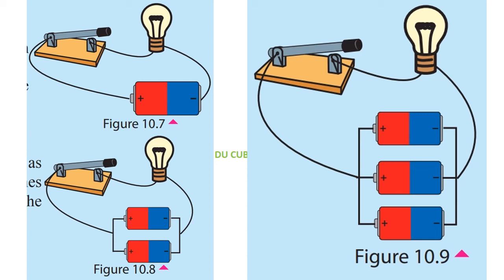Now move to the third circuit. Close the switches of the circuits as shown in the figure and compare the brightness of the bulbs.